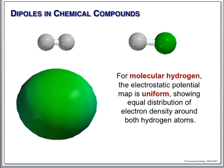For hydrogen, when we color it, we get something like a really nice, uniformly green shape. The fact that it's pretty much uniformly green, top to bottom, side to side, means that we have really nice even electron distribution. This is what you expect because the two hydrogens are identical — you would expect them to share perfectly, and they pretty much do.